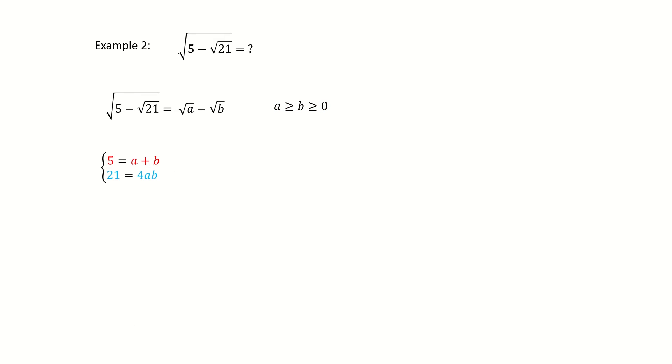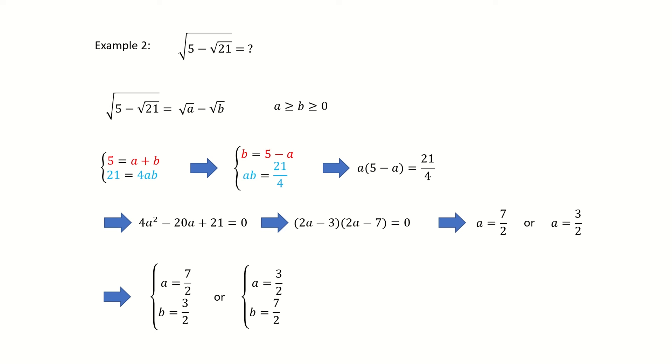So follow the previous slide. Again, we eliminate b to get the correct equation for a. We factor it. And then we get a is 7 over 2 or a is 3 over 2. We got two solutions. But be careful about the conditions here. a is greater or equal to b. So we drop the second solution. Then we got the answer here.